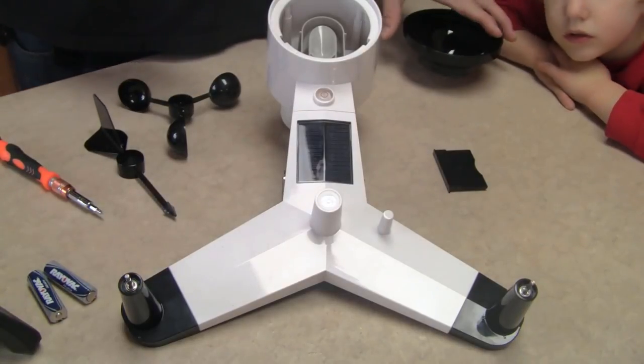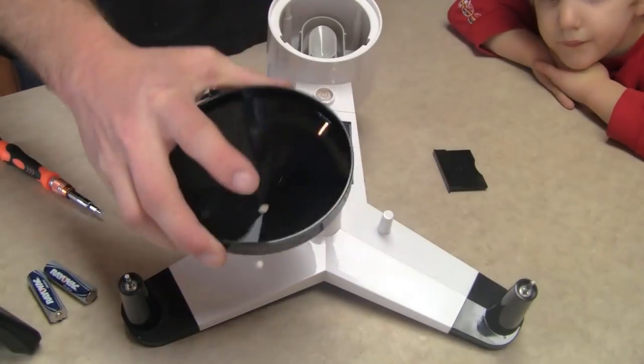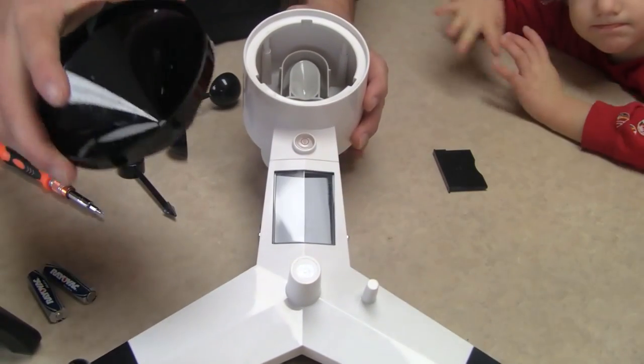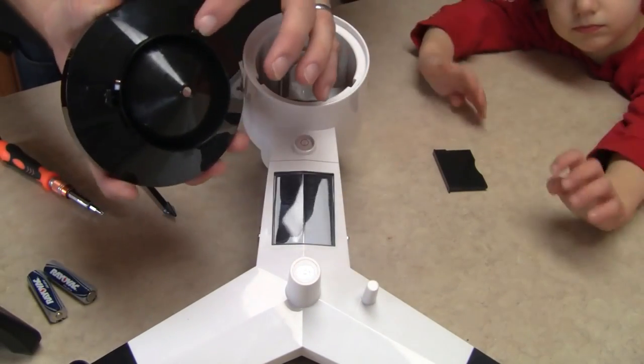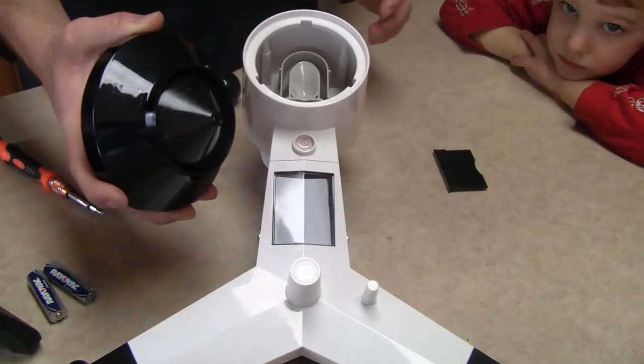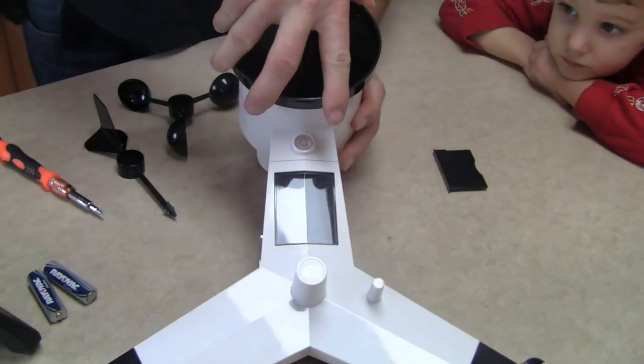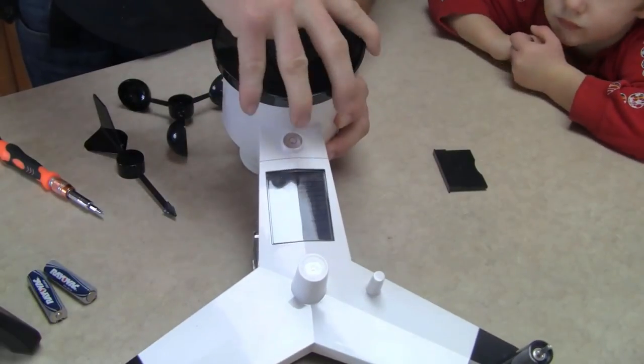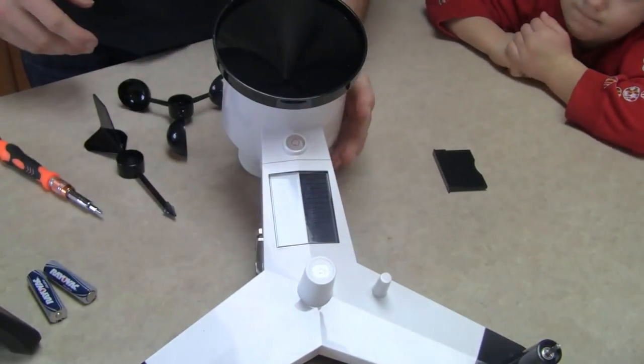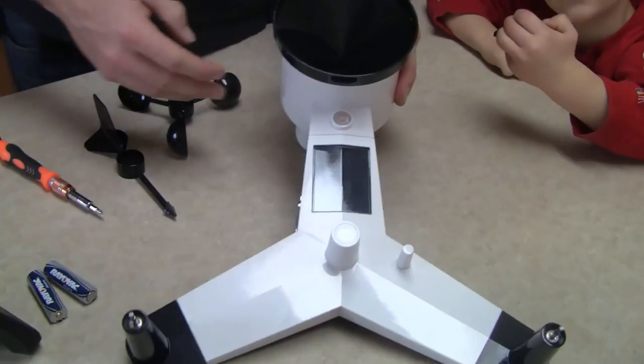First step, take your rain gauge cup. You've got three different pieces here. Put those in, set it in there nice and snug, give it a turn. Click. That's all set up.